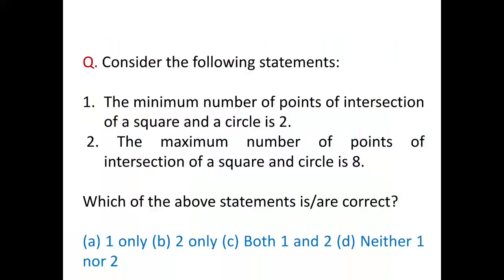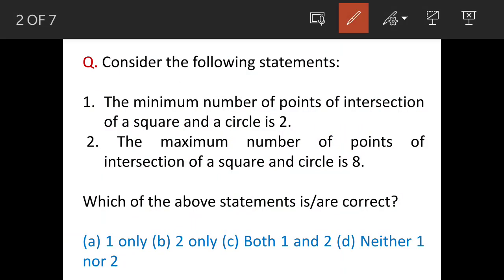We'll see a question on geometry. There are two statements given: the minimum number of points of intersection of a square and circle is 2, and maximum number is 8. So what is the meaning of intersection? Intersection means two lines must cross each other and this becomes our point of intersection. Which one of the above is correct?